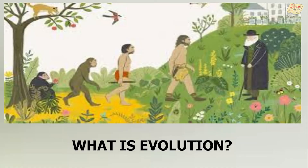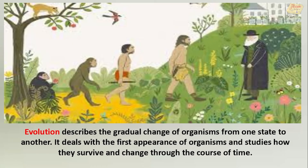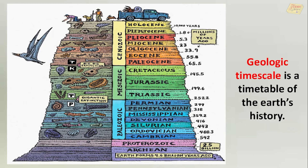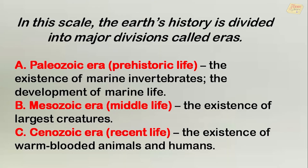What is evolution? Evolution describes the gradual change of organisms from one state to another. It deals with the first appearance of organisms and studies how they survive and change through the course of time. Geologists constructed a timetable of the Earth's history, which is called the geologic timescale. It is a timetable of the Earth's history where the Earth's history is divided into major divisions called eras.